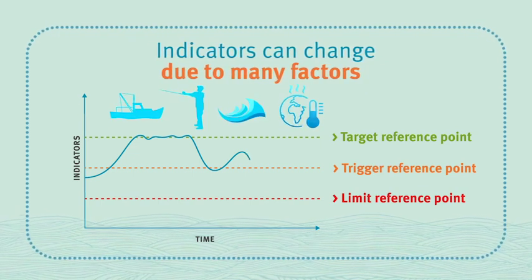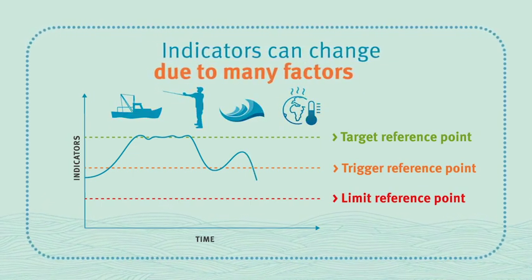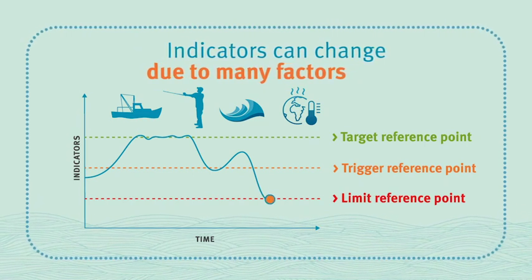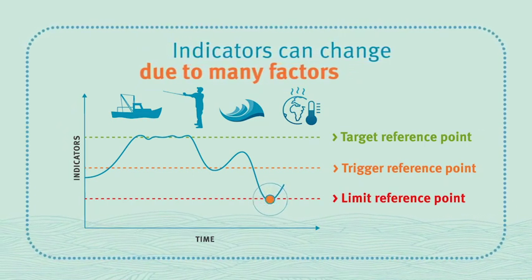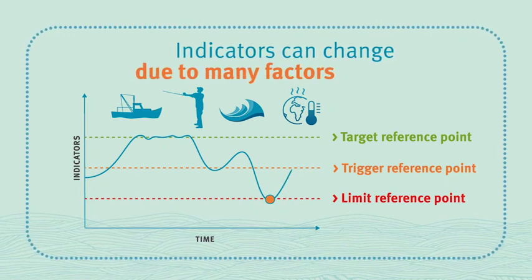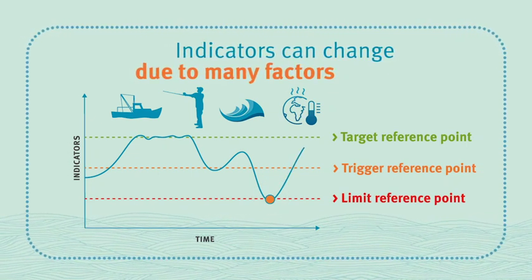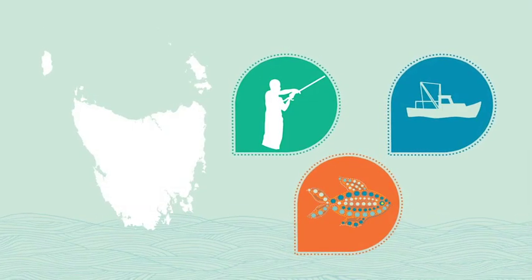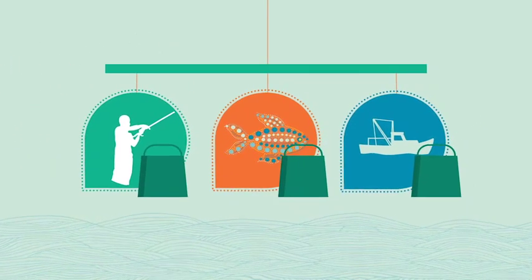If limit reference points are breached, urgent management actions such as a fishery closure or significant reduction in catch effort should occur to allow stocks to recover. Reference points also trigger management actions when a fishery is recovering — this may be under a separate rebuilding strategy or recovery plan. Harvest strategies can help manage fishing activities of all sectors under a unified management approach.